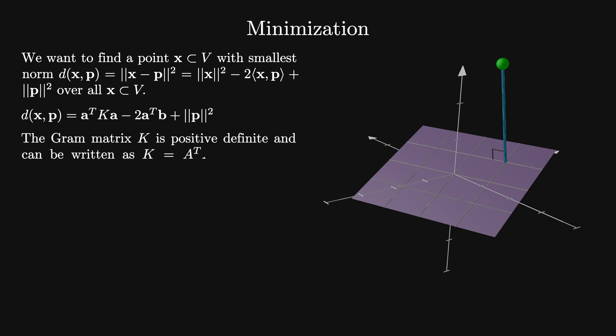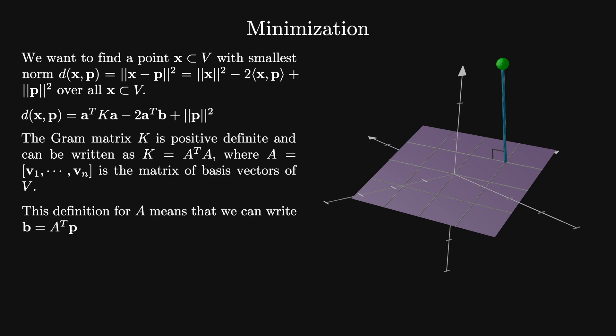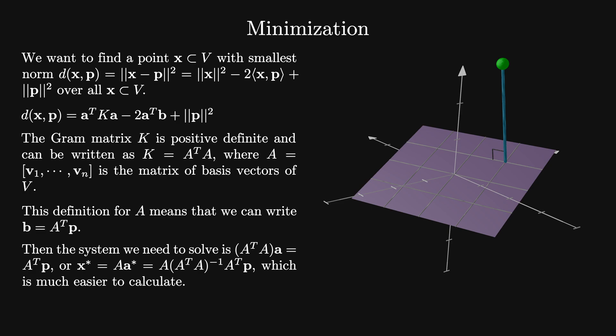The Gram matrix is positive definite and can be written as K equals A^T A, where A is the matrix of basis vectors of v. Then we can write b equals A^T p, and the system we want to solve, K a equals b, becomes A^T A acting on a equals A^T p. Then the minimal vector x* equals A a* equals A(A^T A)^{-1} A^T p, which we can calculate using standard methods.